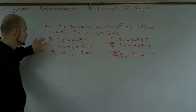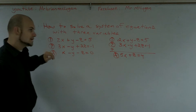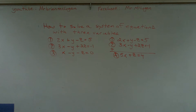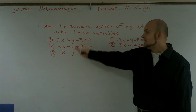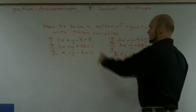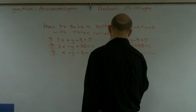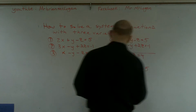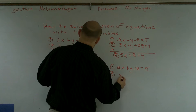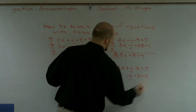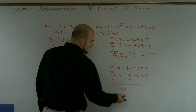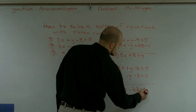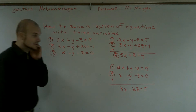Now I've already done equations one and two, so the next pair I need is either one and three, or two and three. Equations one and three would be easiest because one y is positive and one is negative, so I can just add them again. So: 2x plus y minus z equals five, plus x minus y minus z equals zero. Adding those two equations, the y's cancel out and I get 3x minus 2z equals five. I'll label this equation b.